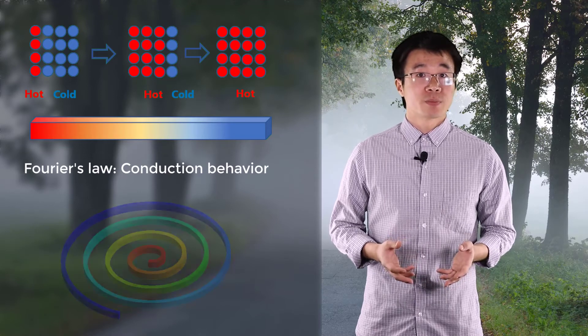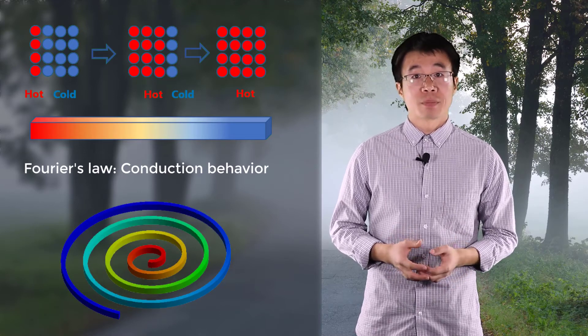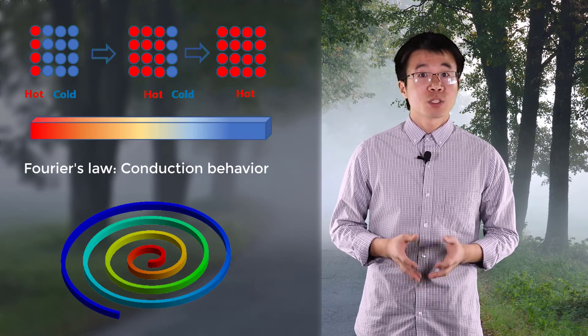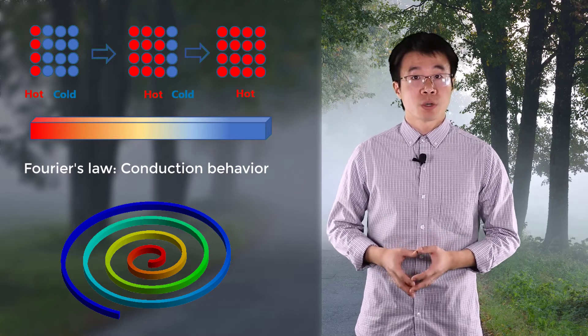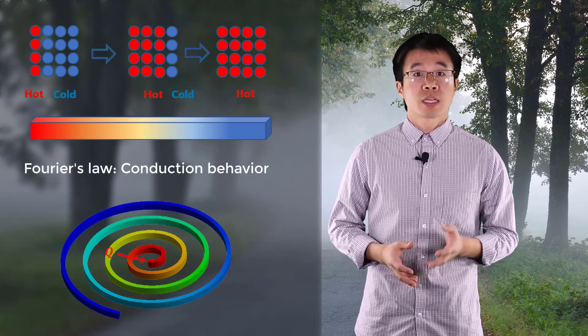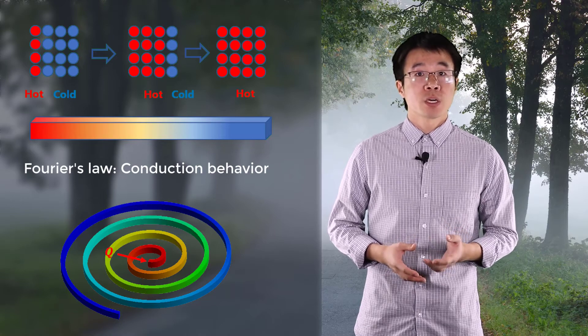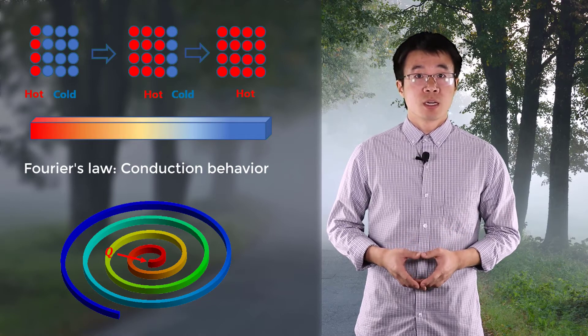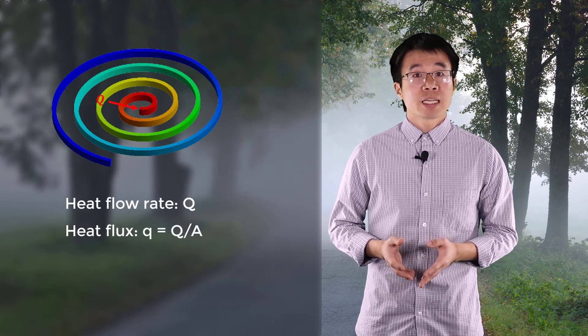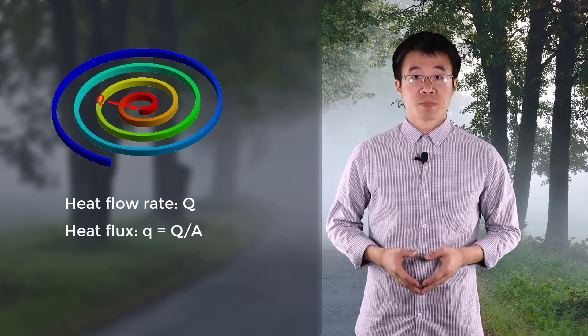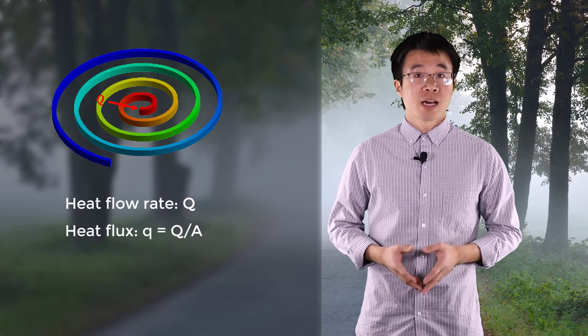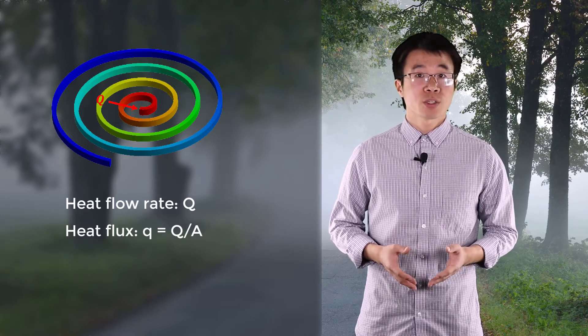Consider an electric heater. Heat energy is provided by electricity. The amount of heat transferred into the heating coil per unit time is called the heat flow rate, and the capital letter Q is used in this course. If we divide Q by the cross-section of the coil, we get the heat flow rate per unit area. And we call this term heat flux, and use the lowercase q to denote it.